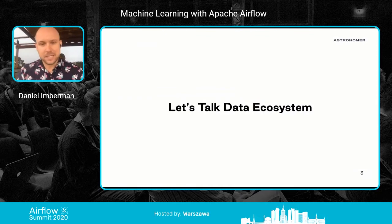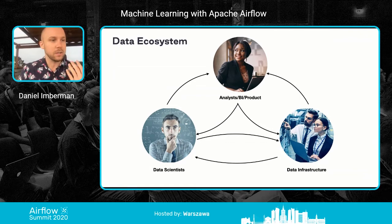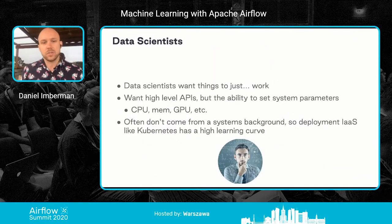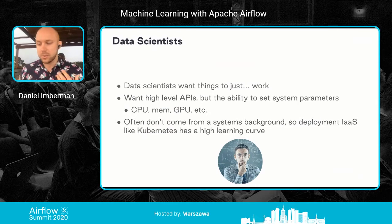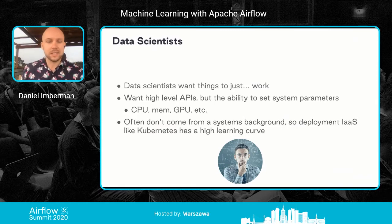Let's talk about the data ecosystem at a tech company. The main data ecosystem is a collaboration between data scientists, data infrastructure, and data analyst teams, all trying to turn large amounts of data into actions that create value for the company. Data scientists essentially just want things to work. They want high-level APIs and the ability to set system parameters without having to understand the underlying details — a data scientist doesn't want to understand how Kubernetes works.